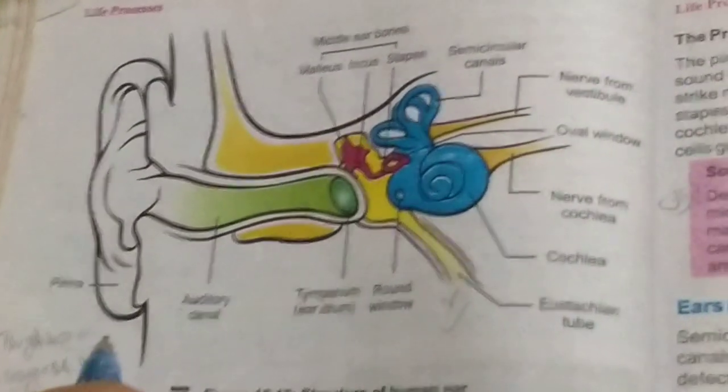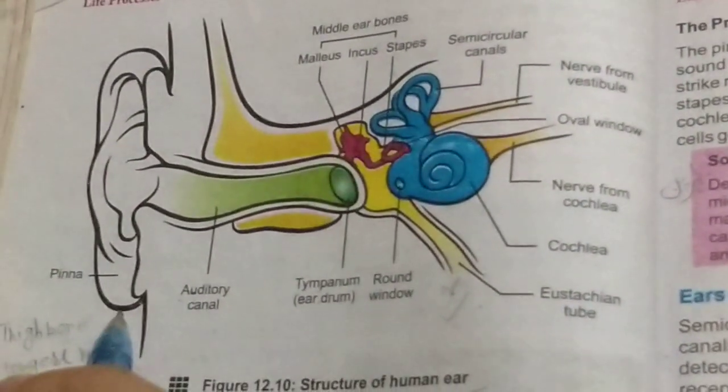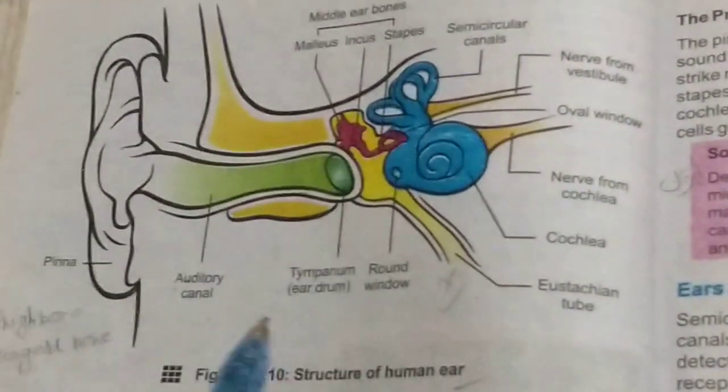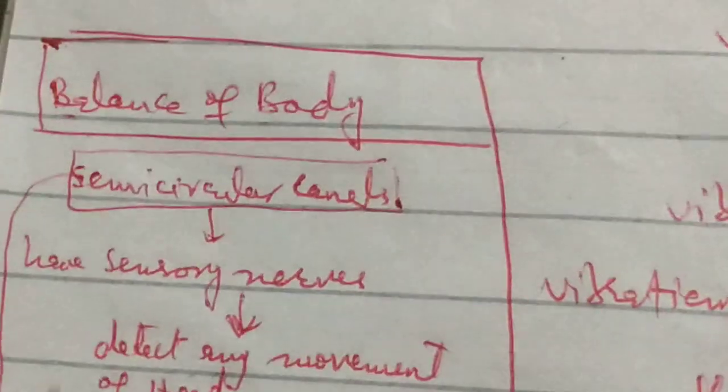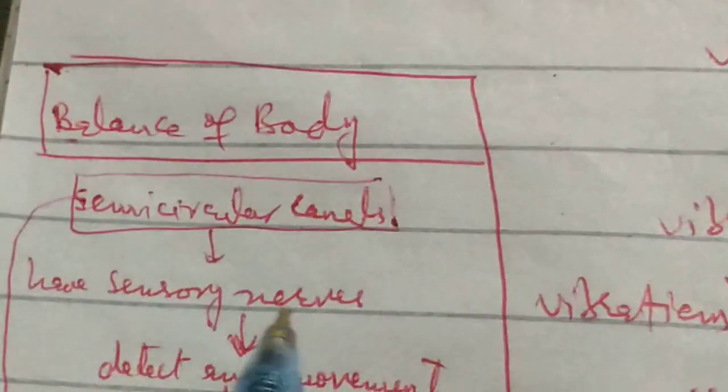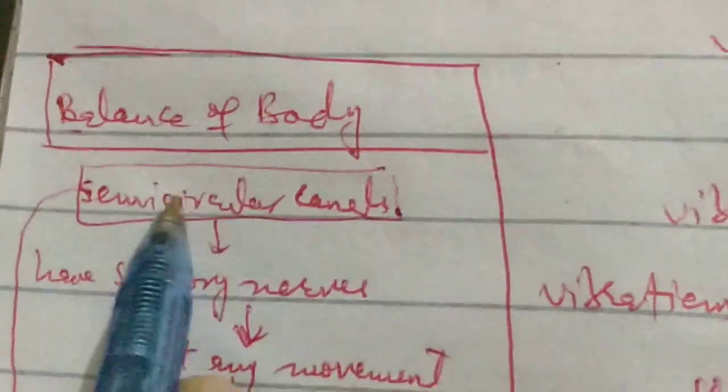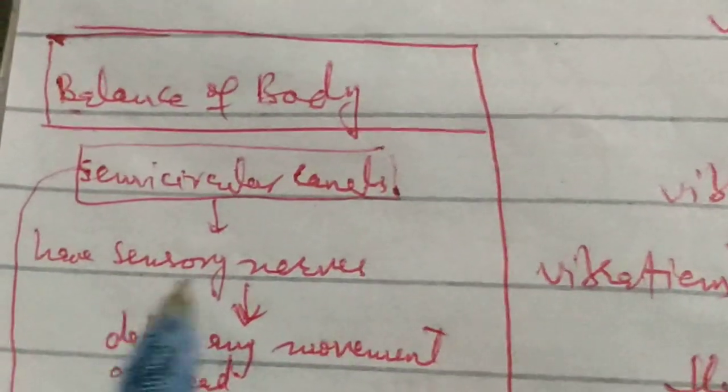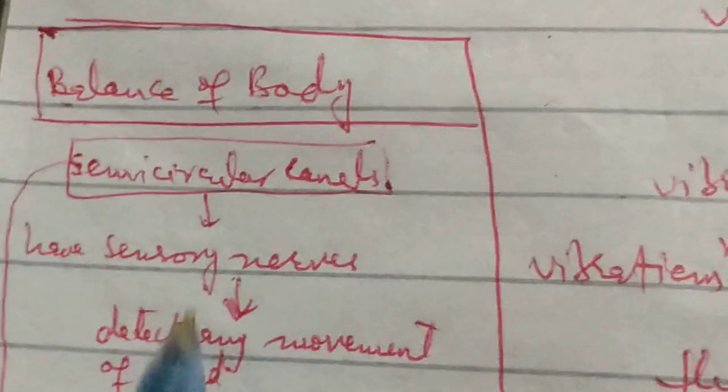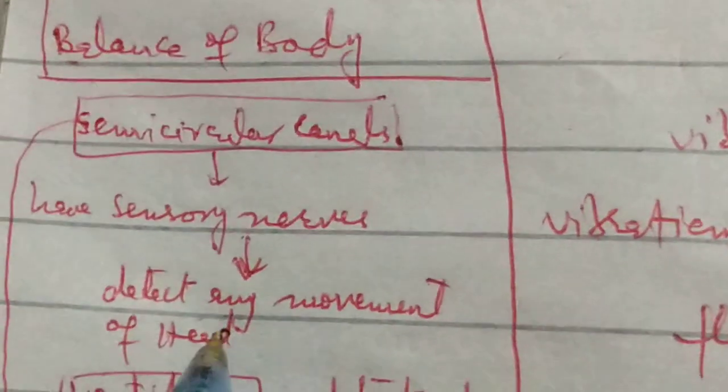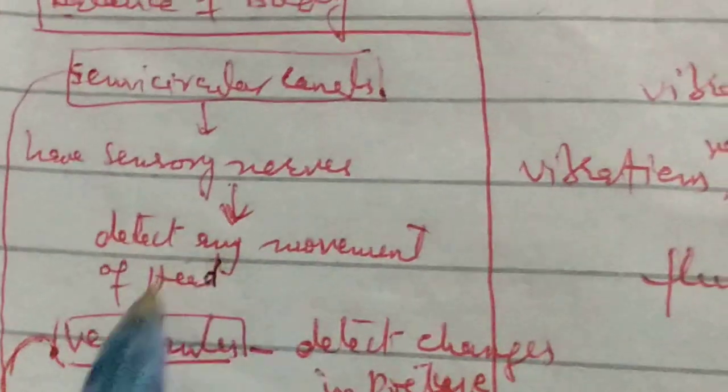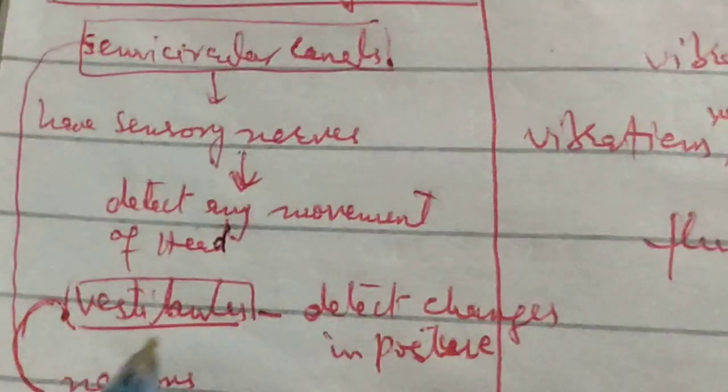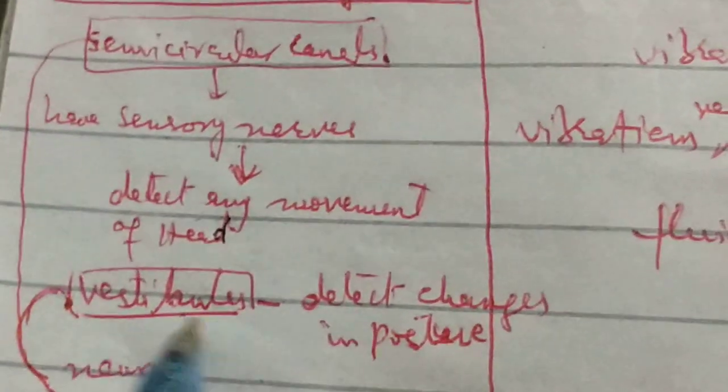We call it maintain the balance of the body. Semicircular canal has sensory nerves. It detects any head movement of the body.